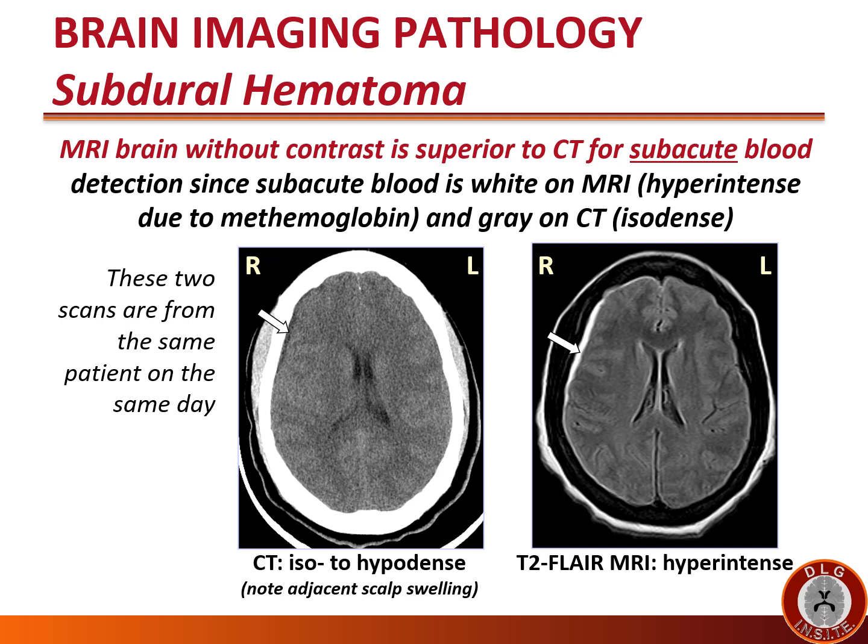MRI brain can be very helpful for detecting subacute subdural hematomas. MRI brain without contrast is actually superior to CT for subacute blood detection, as subacute blood is white or hyperintense on MRI due to methemoglobin, but gray or isodense on CT. Looking at two scans from the same patient on the same day: the CT scan barely shows the iso-to-hypodense subdural under the scalp swelling in the right hemisphere, whereas the MRI FLAIR more clearly shows the hyperintense subdural hematoma on the right.